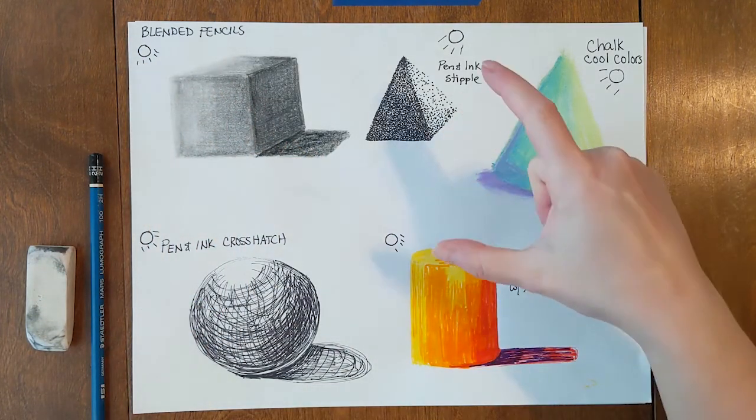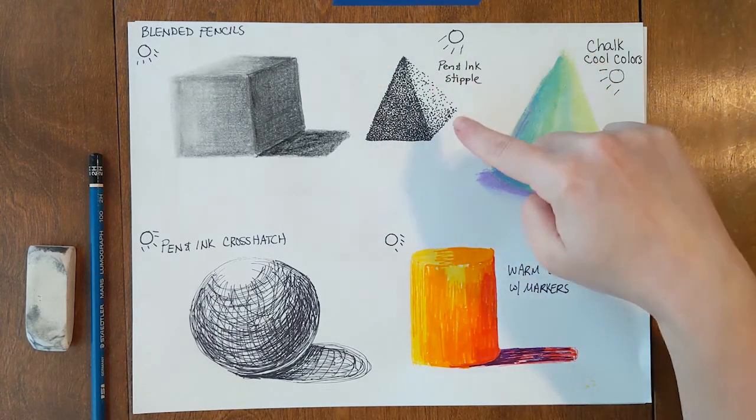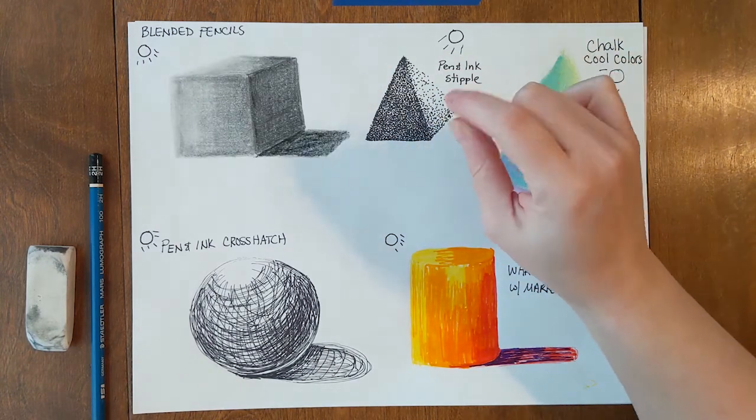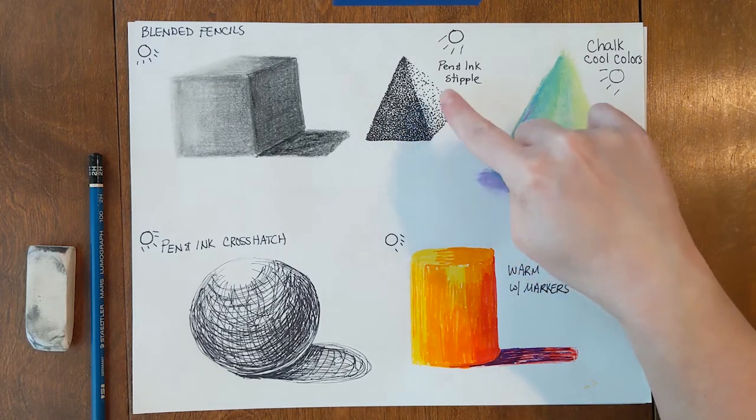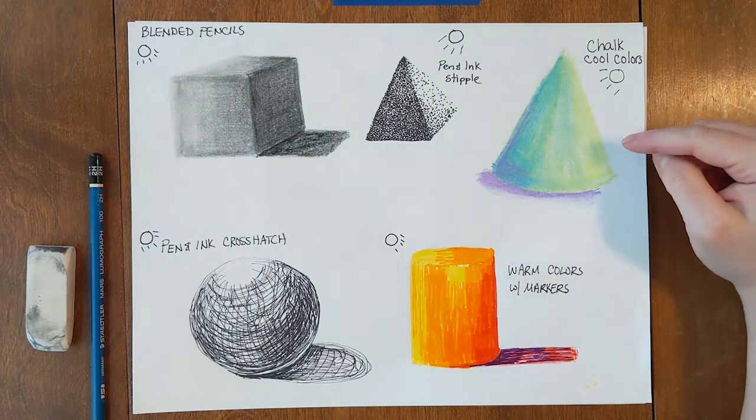For this one, it's a little time consuming. That's why the shape is so small. This one is a pen and ink stipple. That just means I take my pen and make lots and lots of dots all over the pyramid.